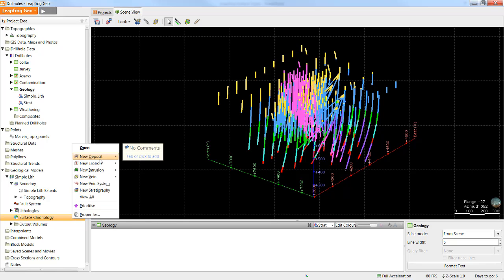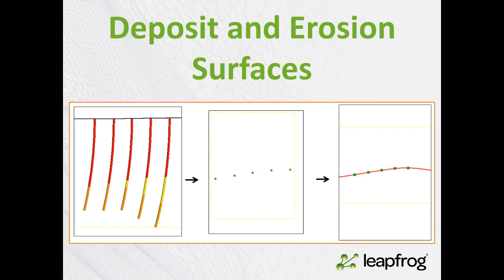I'll start by explaining the functionality of the new deposit and the new erosion surface types. New deposits and erosions create exactly the same surfaces. The only difference between them is when the surfaces are activated to produce output volumes.